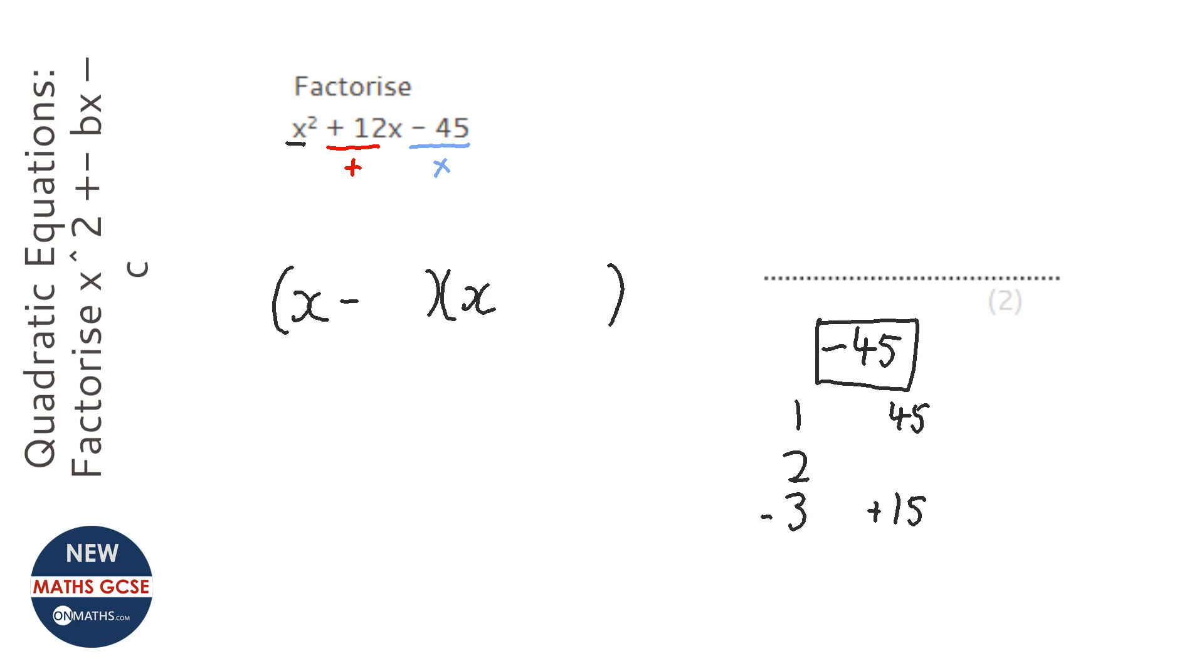So we'll have a negative 3 and a positive 15. And you can expand that to check that it works, and it doesn't matter which way around you put them. So I'm going to put my answer the other way around.